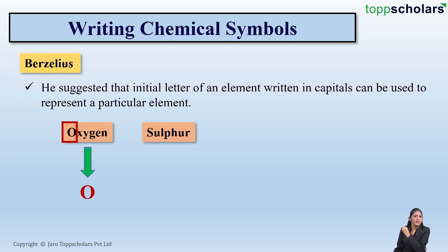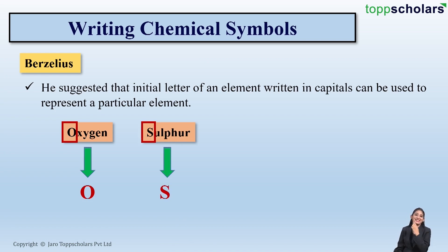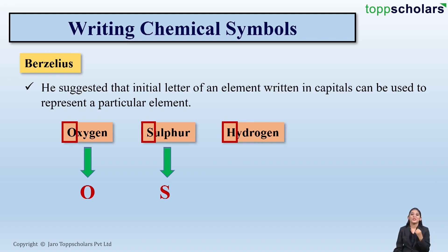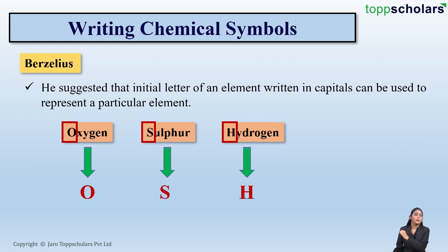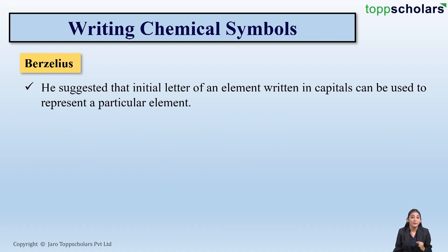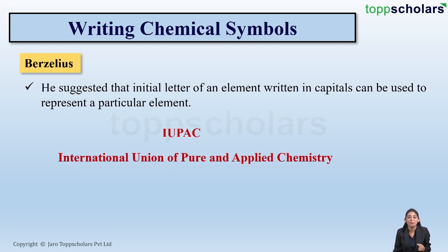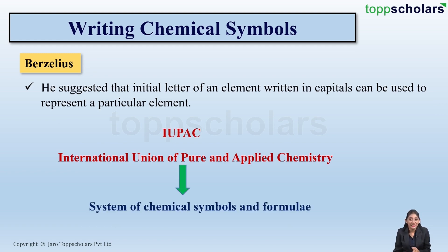What about sulfur? The first letter is S, so sulfur can be represented by S. What about hydrogen? The first letter is H, so hydrogen can be represented by the symbol H. This method suggested by Berzelius formed the basis of IUPAC — the International Union of Pure and Applied Chemistry — which is a system of chemical symbols and formulae.